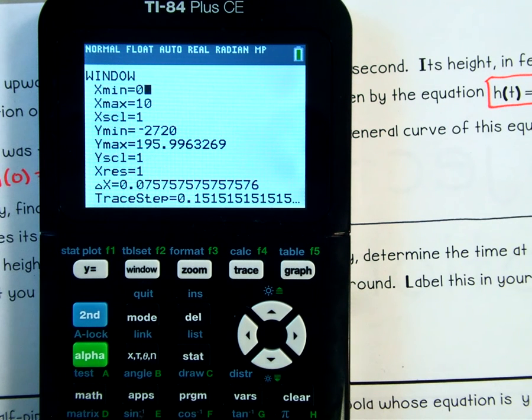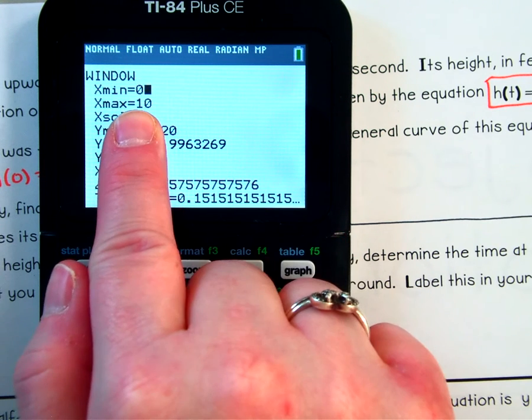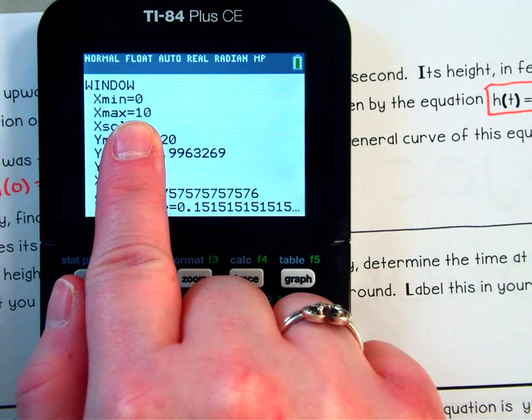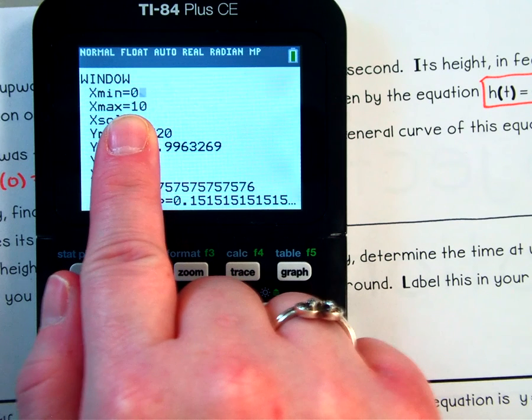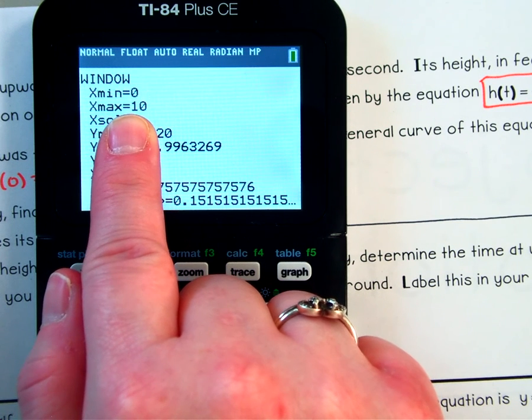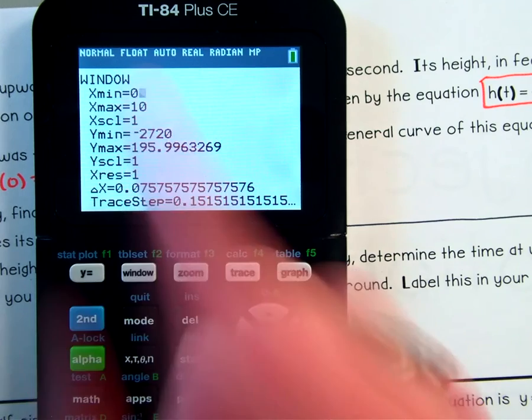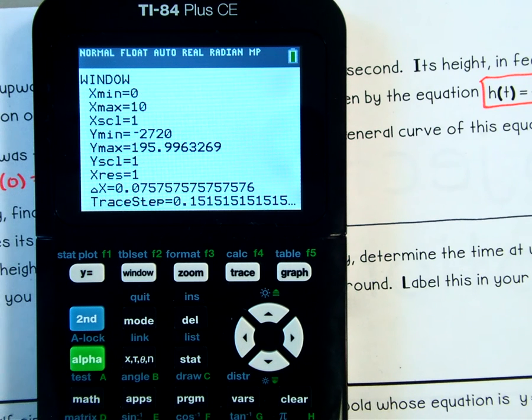My x min, I want to be at 0. And my max, I want it to be at 10. Okay? So 0 and 10. If 0 and 10 doesn't work, I'll change it. But for right now, 0 to 10. And I want my min to be at 0 because, again, I'm only looking at quadrant number 1. I am not looking at anything else.